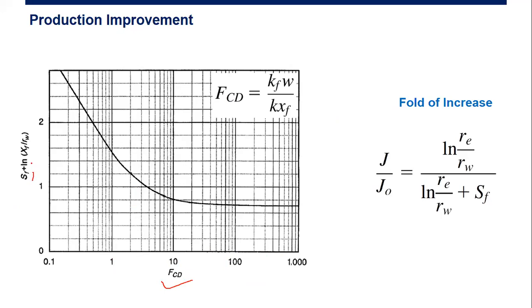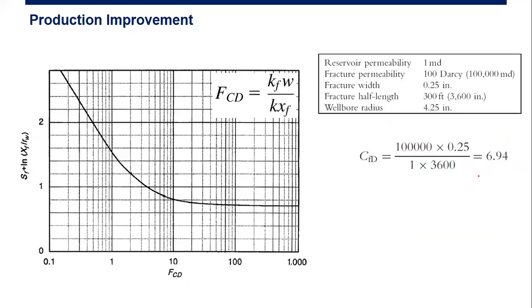We can also calculate the fold of increase. The increase of productivity due to the fracture can be calculated using this formula: logarithmic natural of RE, reservoir radius, divided by wellbore radius, divided by, and this is very important, SF, the skin factor due to fracture.